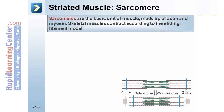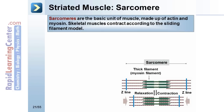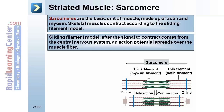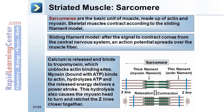Sarcomeres are the basic unit of muscle, made up of actin and myosin. Skeletal muscles contract according to the sliding filament model. After the signal to contract comes from the central nervous system, an action potential spreads over the muscle fiber. Calcium is released and binds to tropomyosin, which unblocks actin binding sites. Myosin, bound with ATP, binds to actin, hydrolyzes ATP, and the released energy delivers a power stroke. This hydrolysis also causes the myosin head to turn and ratchet the Z-lines closer together.